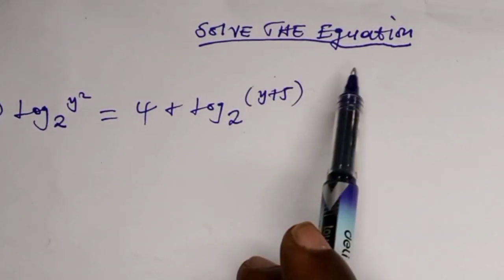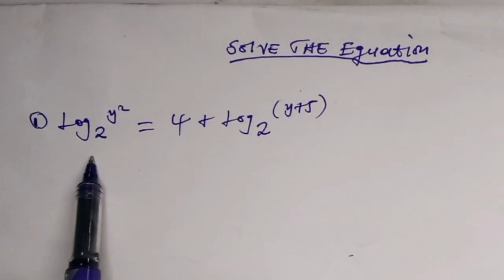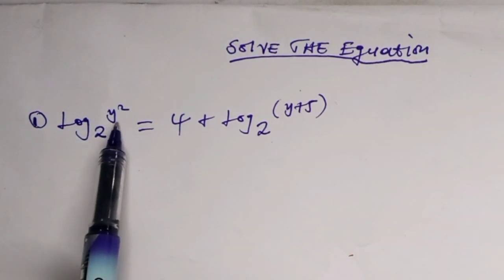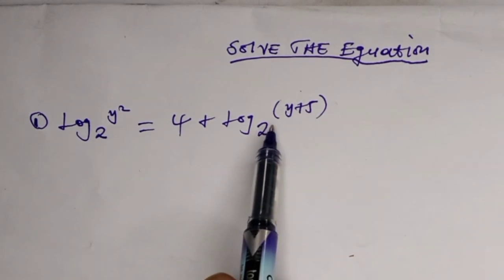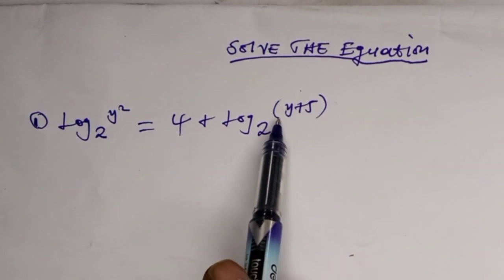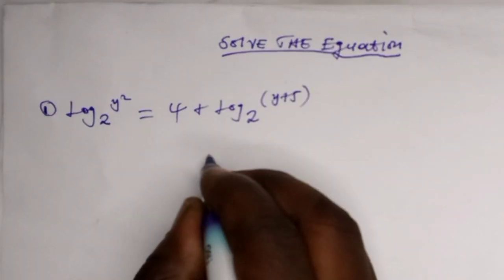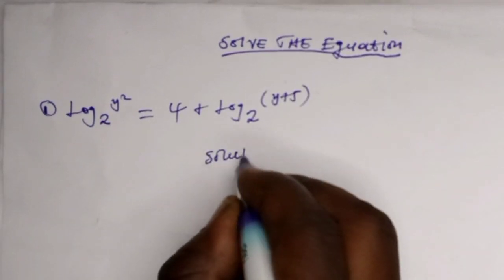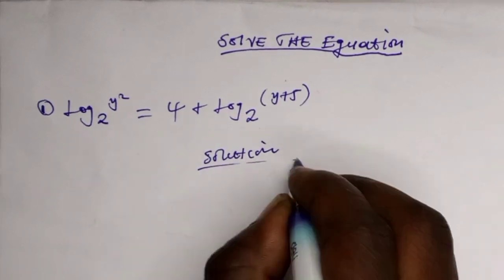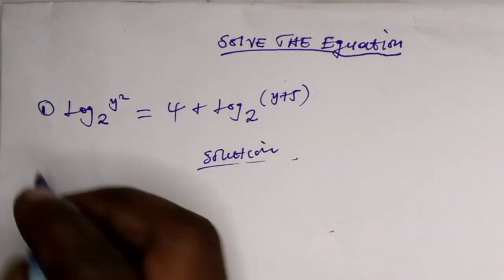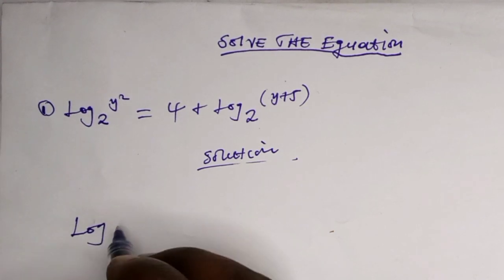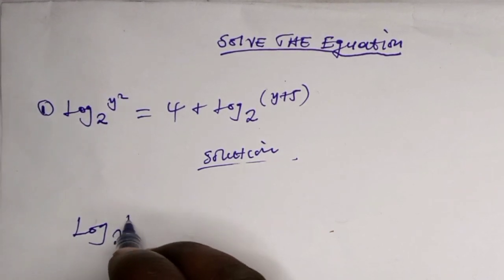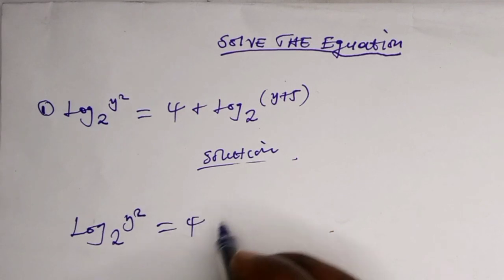We are given this question: solve the equation which is log base 2 of y squared, which is equals to 4 plus log base 2 of open bracket y plus 5. So let's get started. For the solution, we have log base 2 of y squared which is equals to 4 plus log base 2 of y plus 5.